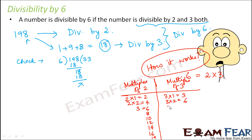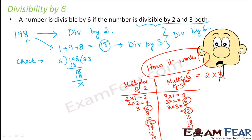Multiples of 3: 3, 6, 9, 12, 15, 18, 21, and so on. Now comparing the multiples of 2 and 3, we can see certain common multiples — numbers that appear in both lists. For example, 6 is the first common multiple; the next is 12, then 18, and so on. These common multiples are nothing but multiples of 6.